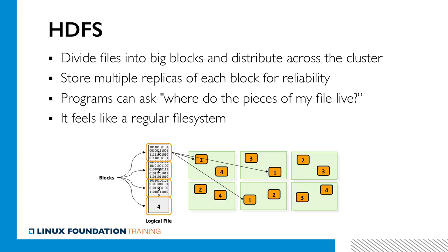HDFS allows the client to know where the replicas of each block are in the cluster. In other words, if a client asks, HDFS gives that client a full map. This may sound like a subtle extension, but it is powerful enough to enable a whole new architecture of data processing — an architecture where instead of sending data to the client, you send client computation to the data. We will run into this principle when discussing YARN and in our discussion of analytical frameworks in Chapter 4.